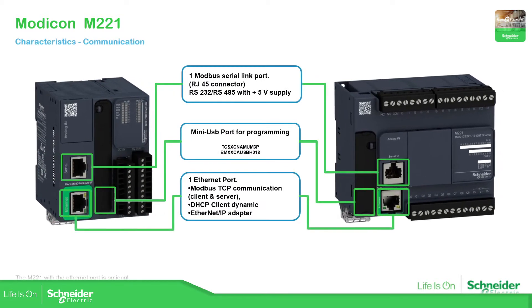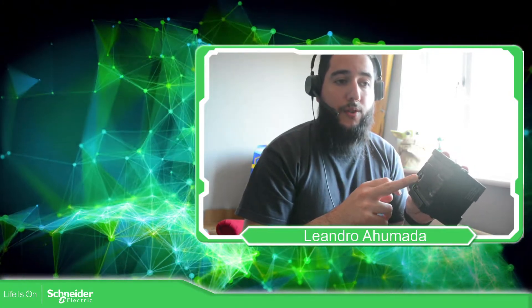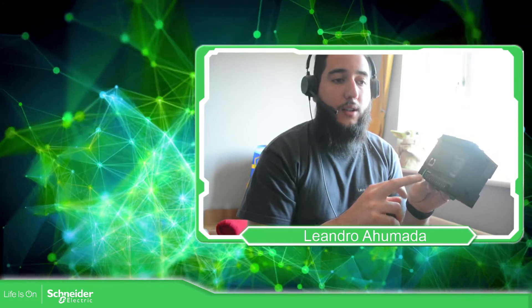The next feature is communication. On the front of this PLC — using the standard TM221C — we have the Modbus serial communication port. If your PLC doesn't have the TM221CE or M221ME reference, you only have that port; but if you have the 'E' in the reference it means you have the Ethernet port on the back, with LEDs indicating communication activity.